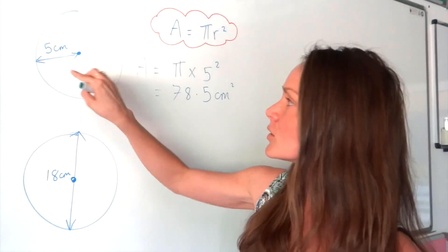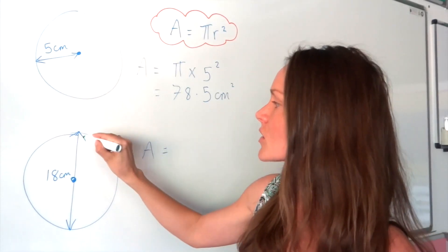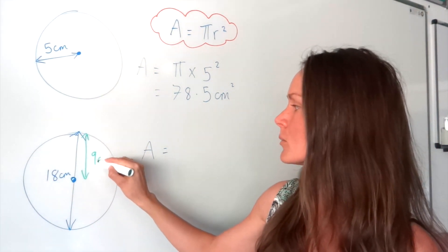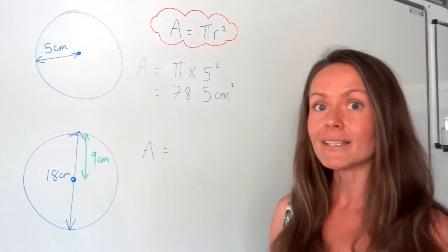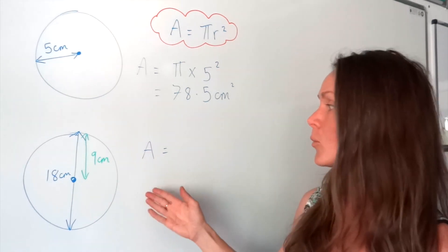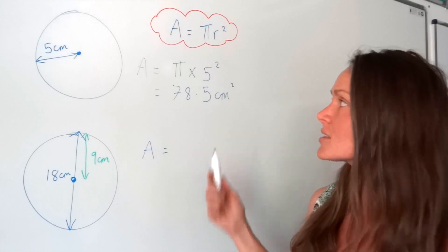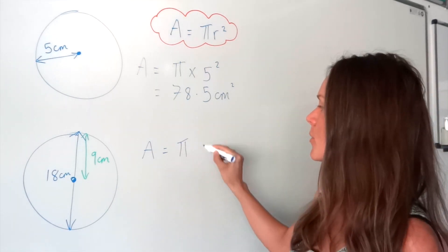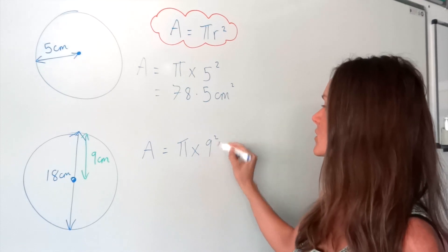So remember, the radius is halfway. So if we calculate halfway, we have to divide 18 by 2, which gives me 9. Now that I've got the radius, I can work out the area of the circle, just like in the example above. So I'm going to do pi multiplied by 9 squared.